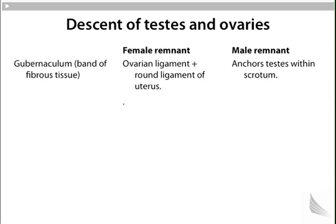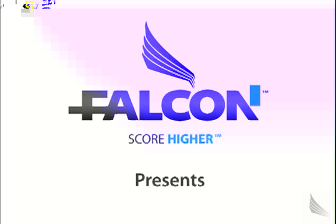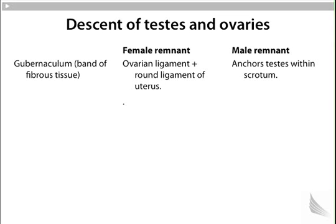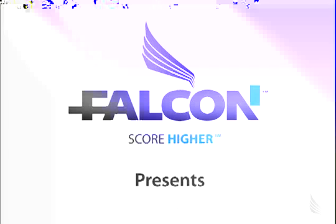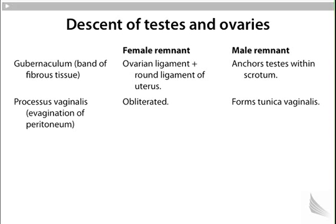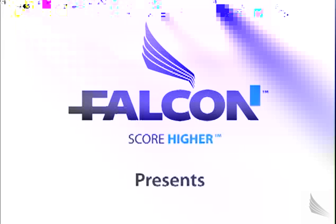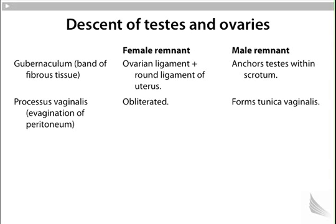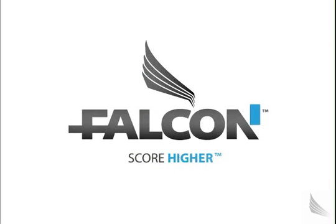Descent of testes and ovaries: the gubernaculum is a band of fibrous tissue involved in descent of the testes or ovaries, particularly through the inguinal canals in males. The female remnant of the gubernaculum becomes the ovarian ligament plus the round ligament of the uterus; the male remnant anchors the testes to the scrotum. The processus vaginalis is an evagination of peritoneum — in females it is obliterated; the male remnant is the tunica vaginalis. This concludes the fourth and final part of embryology. If you have questions, please refer to Falcon Online. This is Dr. Carlo Raj. Thank you.